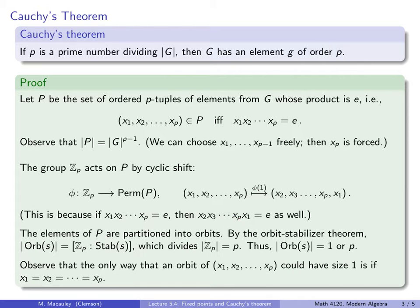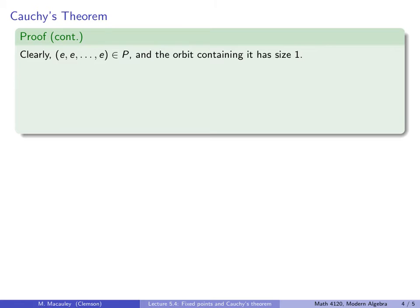But observe that the only way that an orbit containing this element could have size 1 is if every entry is the same. In other words, x₁ equals x₂ all the way up to xₚ. Well, clearly, here's an element that has an orbit of size 1. Here's a fixed point. Just stick the identity in every entry. Cyclically shifting that fixes it, so the orbit containing it has size 1.